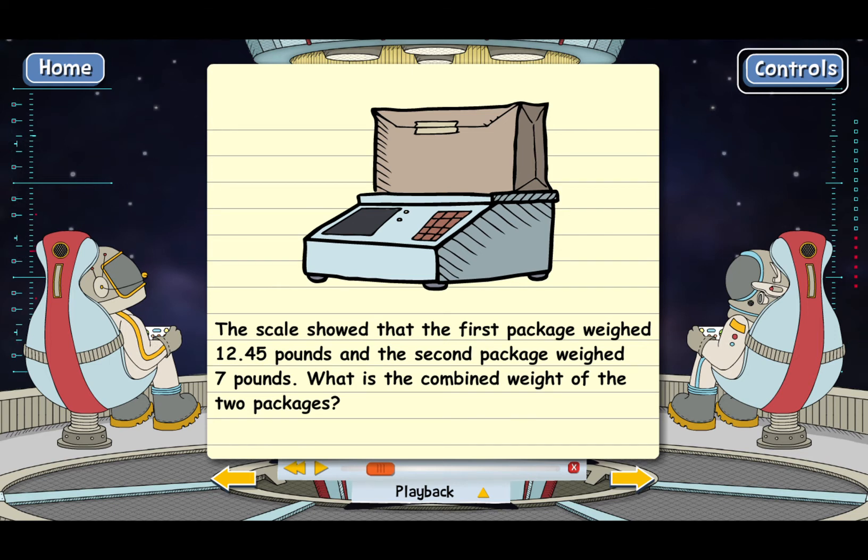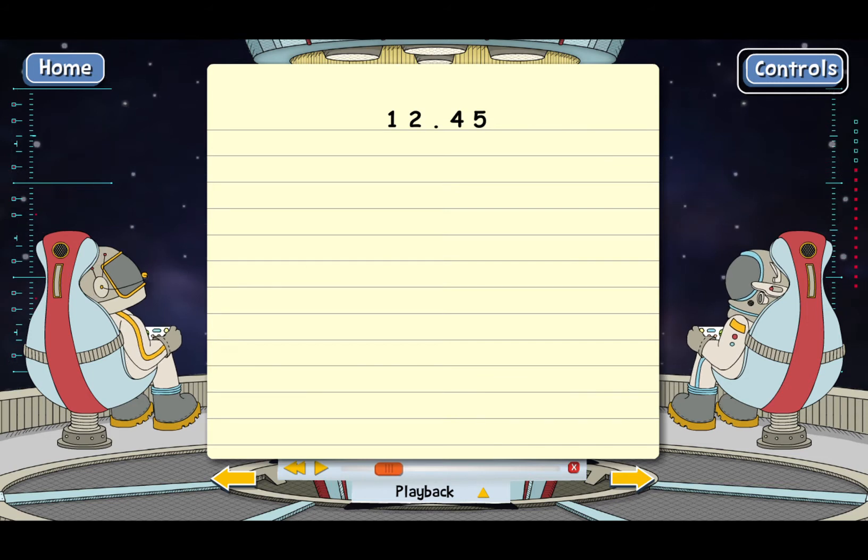To solve this problem, we need to add 12.45 to the whole number 7. And here's how we do it. We put 12.45 on top because it has more digits. And then 7 can go on bottom.